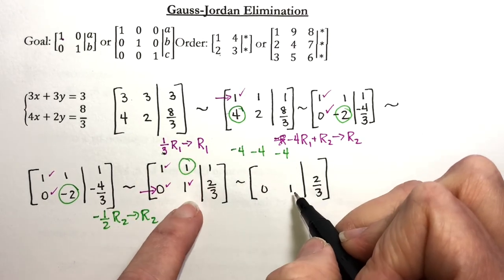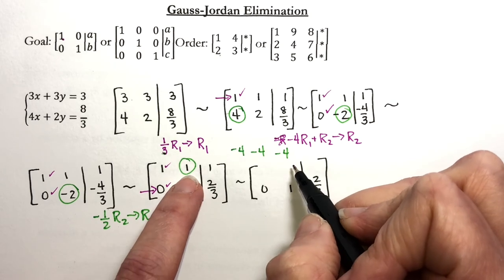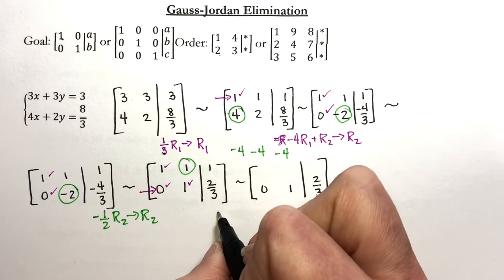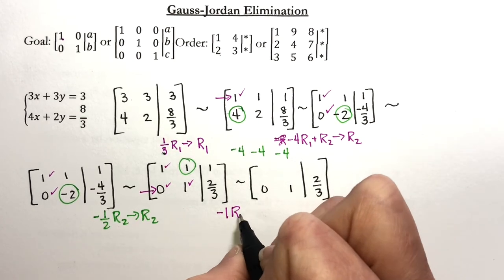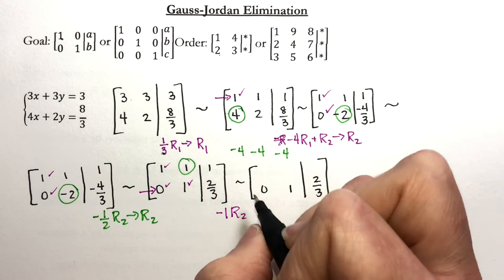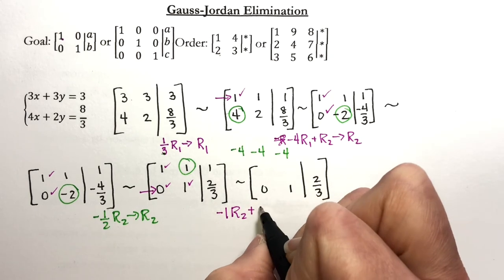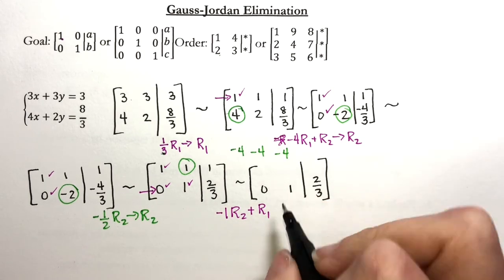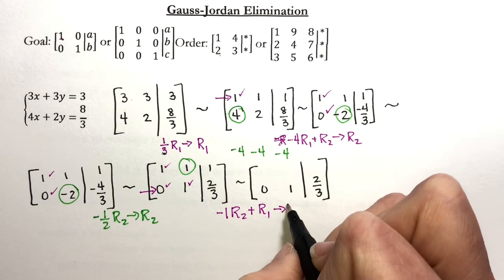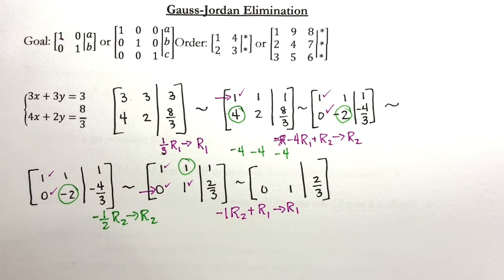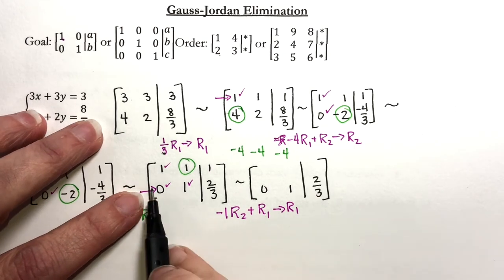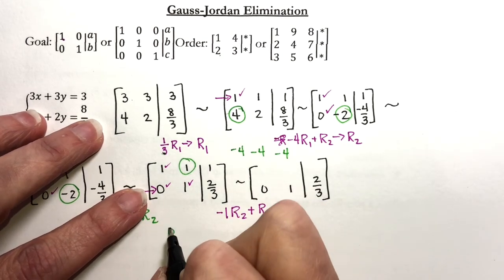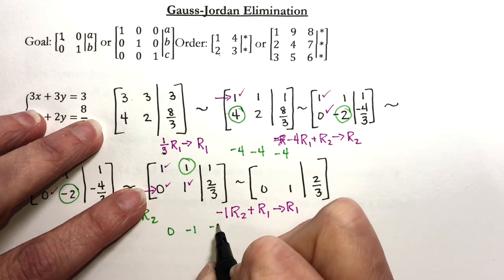Now I've got my one here already. I'm trying to get this one changed. So I look in my column. What do I need to multiply a one by to get rid of a positive one? I need to multiply it by a negative one. So I'm going to do negative one times row two, because it's my tool row. I'm going to add that to row one, and then I'm going to replace row one with that answer. Well, negative one times row two would be zero, negative one, and negative two-thirds.